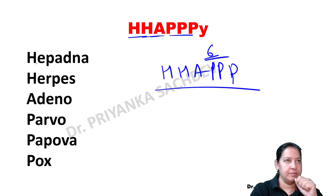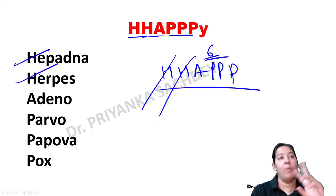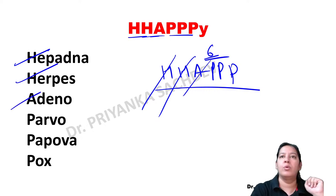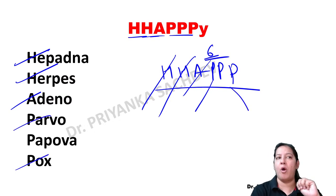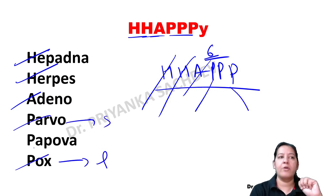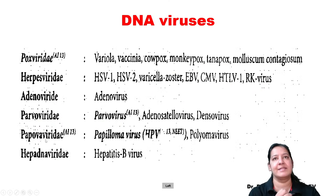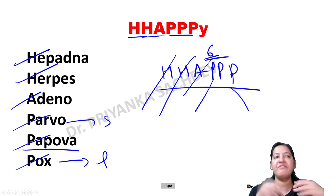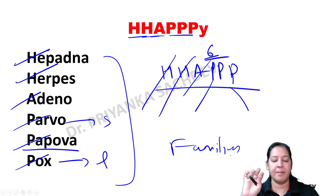The two H are Herpes and Hepadena. The one A is Adeno. The three P are: Parvo (the smallest), Pox (the largest), and Pepova. These are the six DNA virus families. Inside Pox family we have Variola virus, Vaccinia virus, Cowpox, Monkeypox, Tanapox, and Molluscum contagiosum. In Herpes family we have eight viruses total. In Adenoviridae we have only one virus - adenovirus. In Pepova we have three important viruses. In Hepadena, Hepatitis B is important.